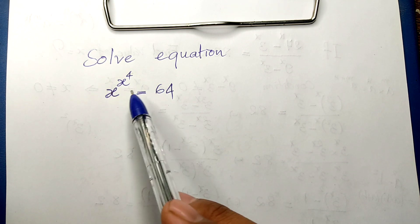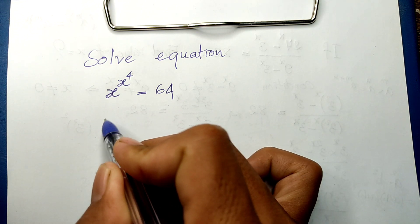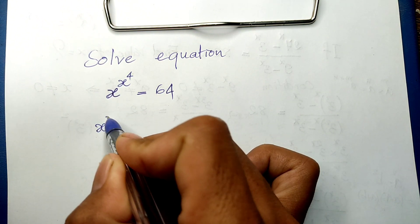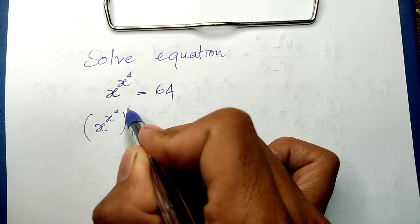So I raise both sides of this equation to the power 4. I get x to the x to the 4th power, all to the power 4, equals 64 to the power 4.